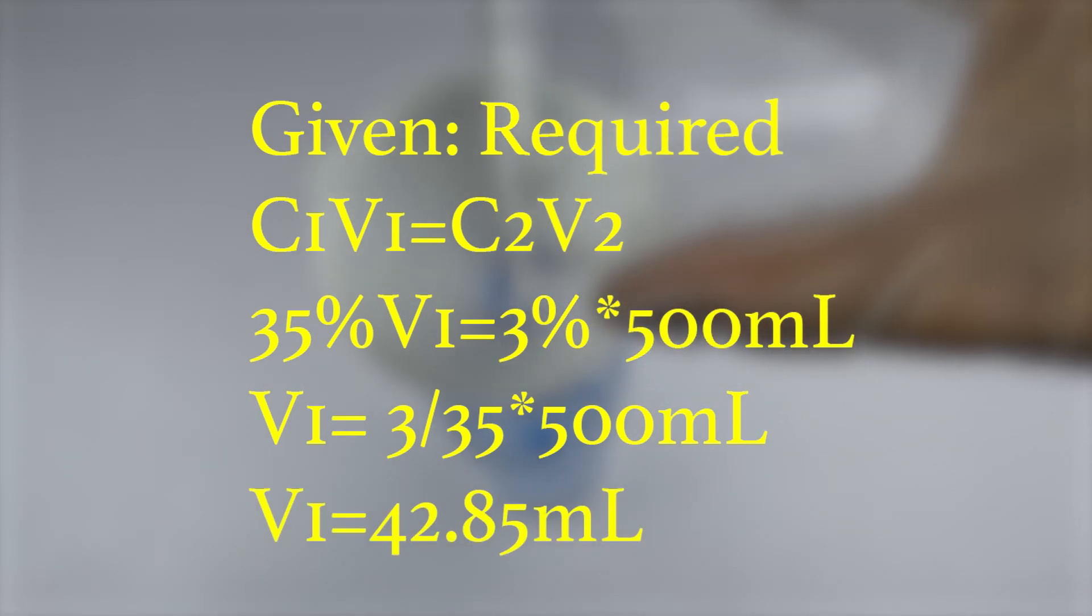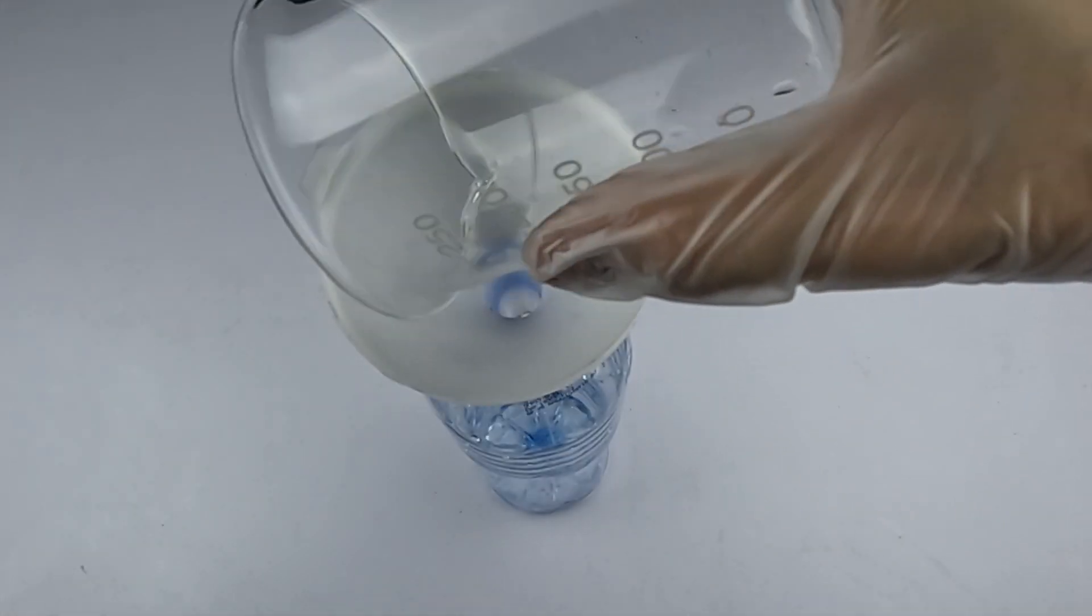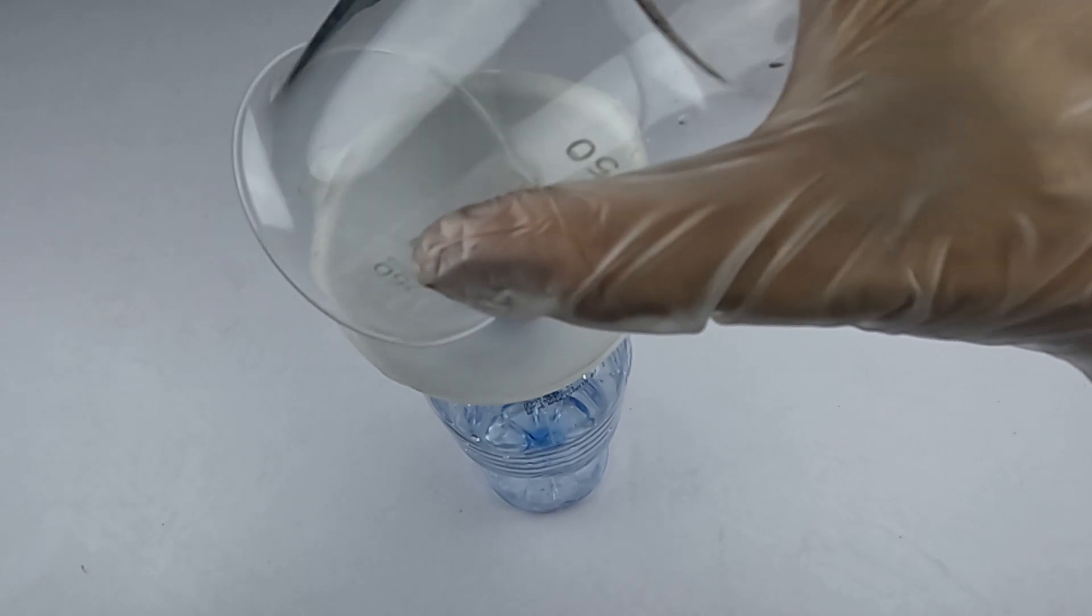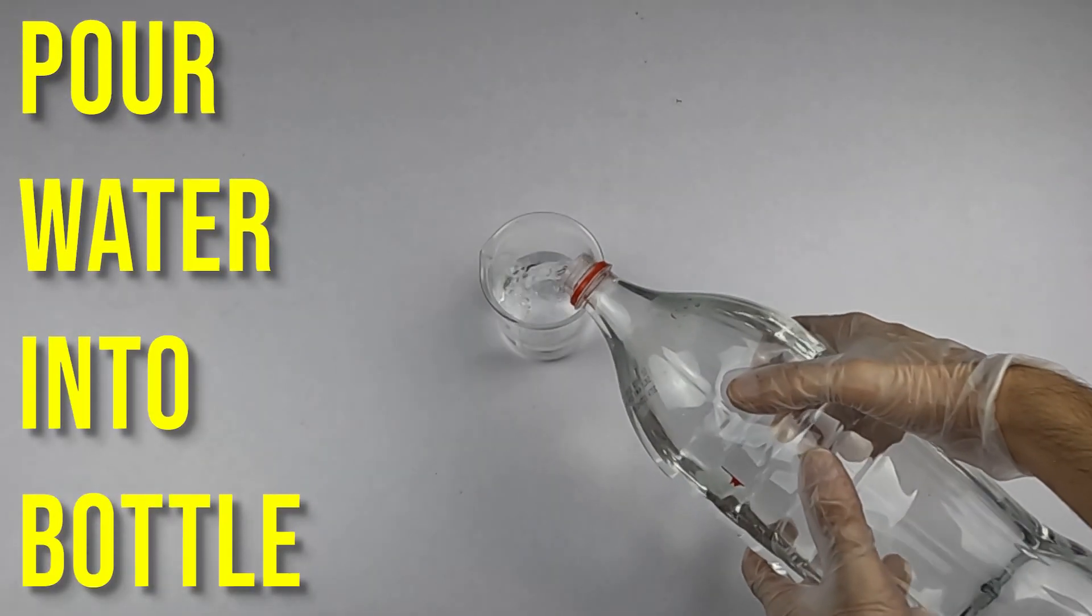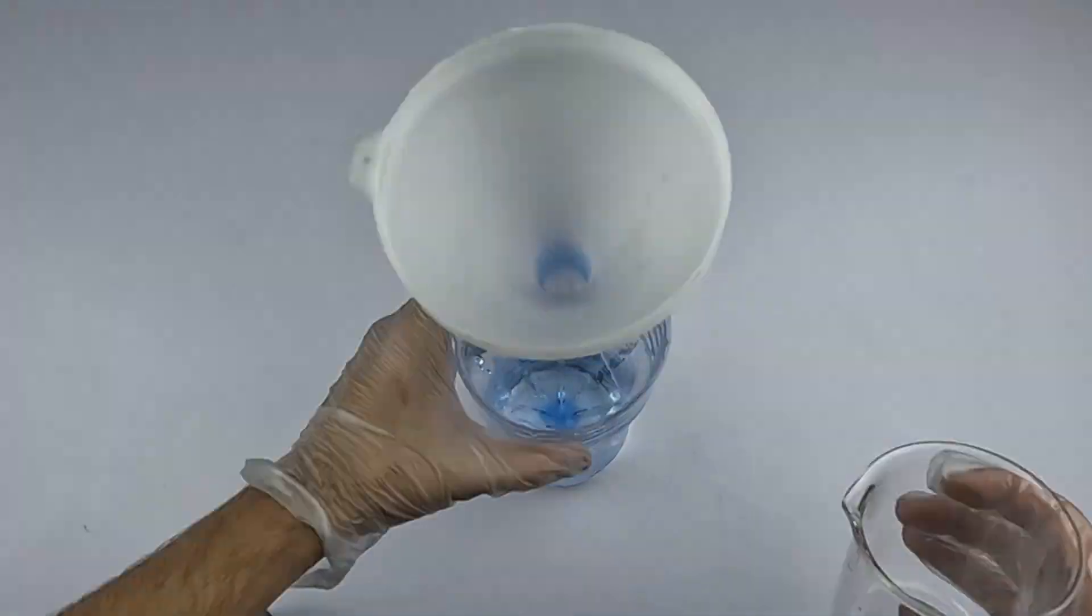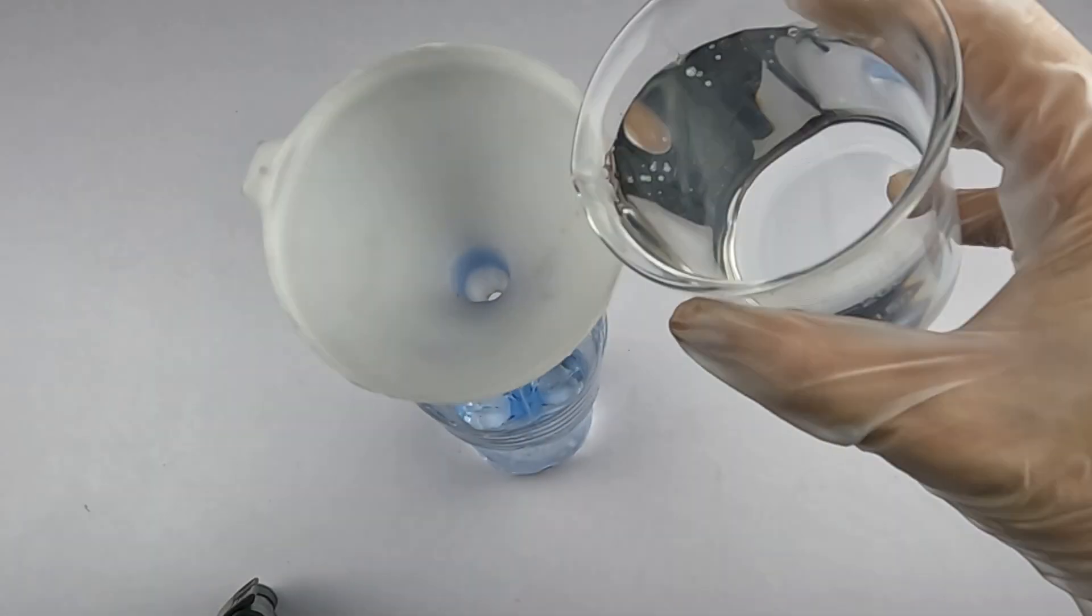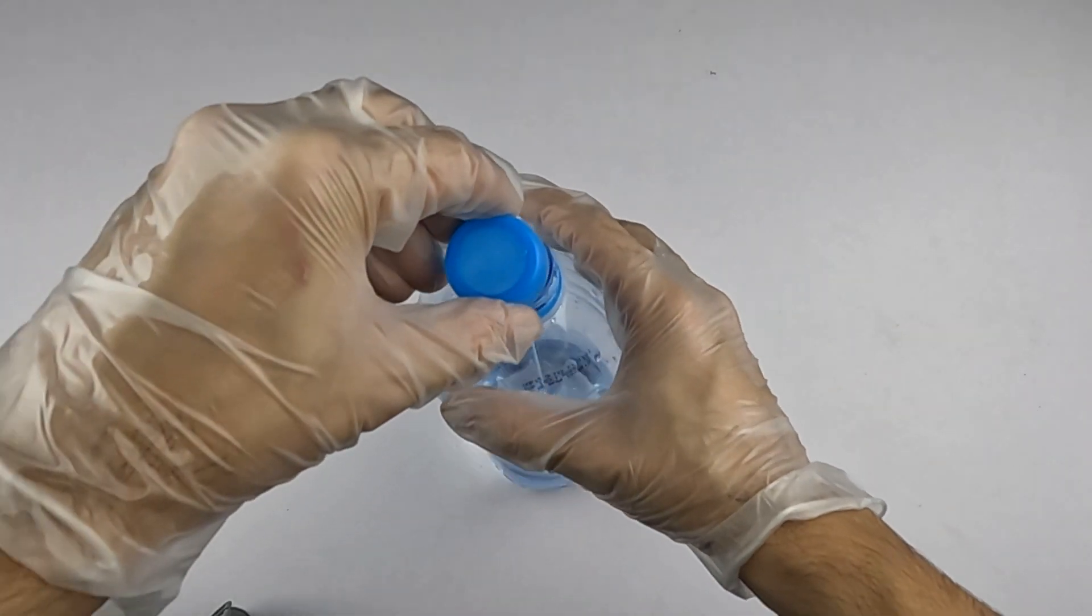First, take 42.85ml of 35% hydrogen peroxide and pour it into the bottle. Next, measure 500ml distilled water. 500ml means two cups of 250ml volume. Then pour water into the bottle, close the lid, and stir it.